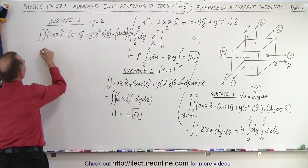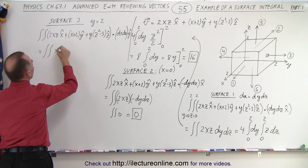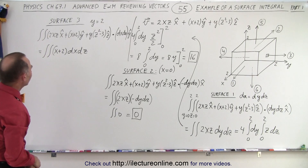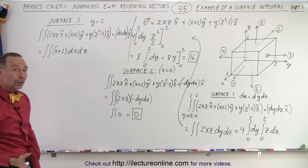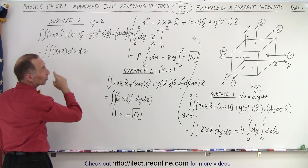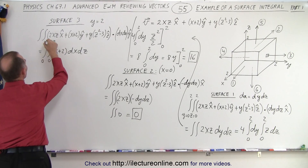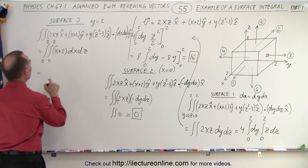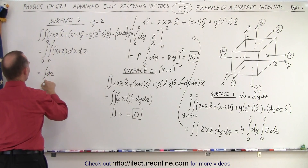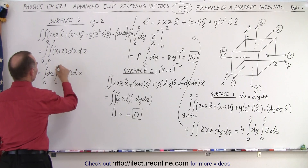When we do the dot product, only the y terms survive — the x and z terms drop out. So this equals the double integral of (x + 2) times dx dz. We integrate over x first, from 0 to 2, and also from 0 to 2 for z. We can separate this as the integral of dz from 0 to 2, times the integral of (x + 2) dx from 0 to 2.